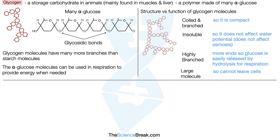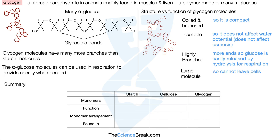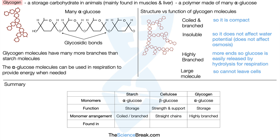Those are the three polysaccharides we need to know. Here's a quick summary: for monomers, starch is made of alpha glucose, cellulose is made of beta glucose, and glycogen is alpha glucose. For function, starch is a storage molecule, cellulose provides strength and support, and glycogen is also a storage molecule. For monomer arrangement, starch is either coiled or branched, cellulose has straight chains of beta glucose, and glycogen is highly branched. Starch is found in plants and algae, cellulose is found in plants and algae too, and glycogen is found in animals only.